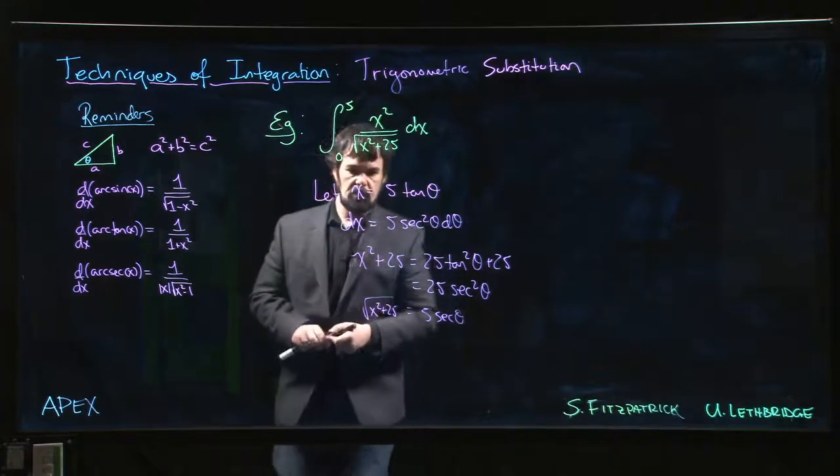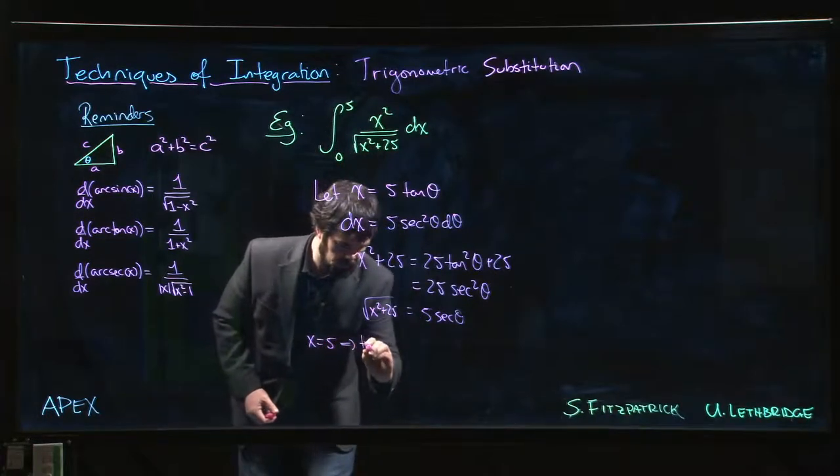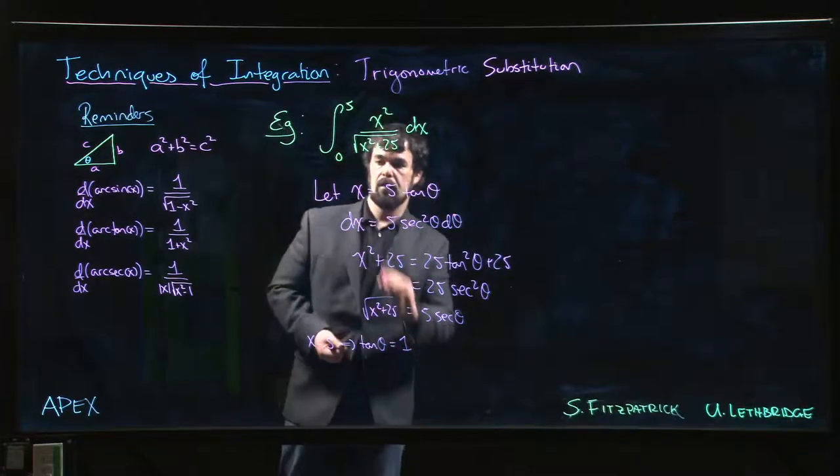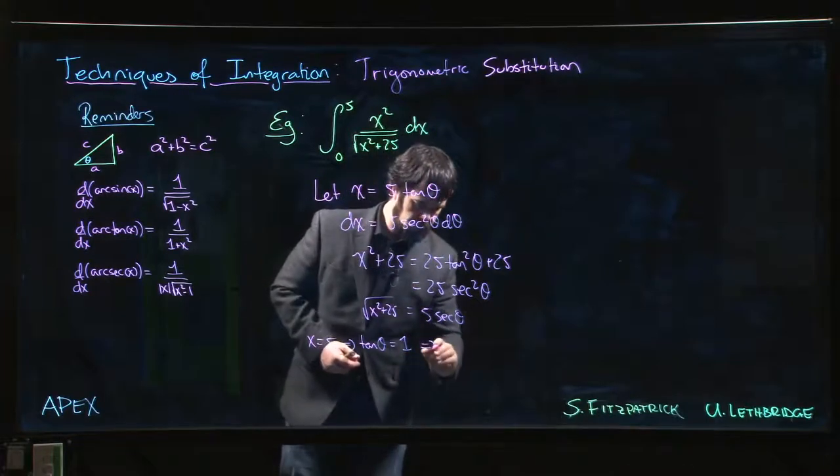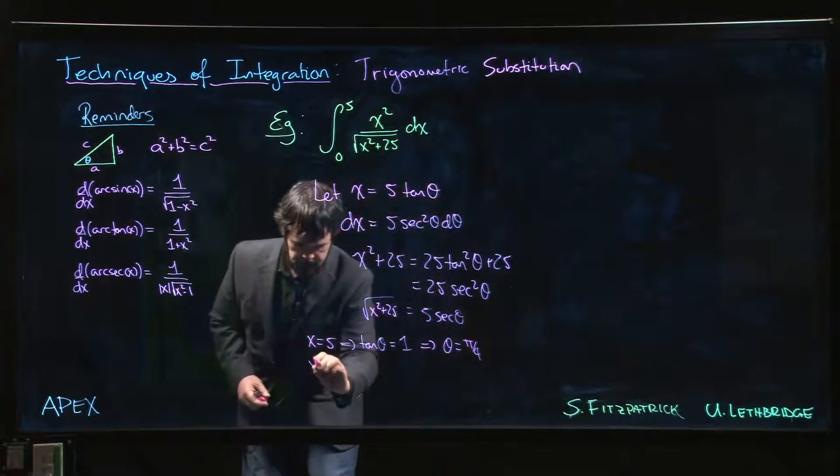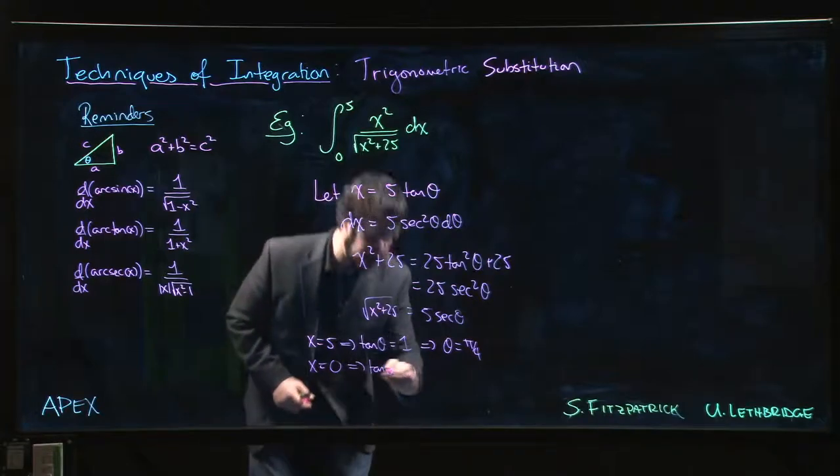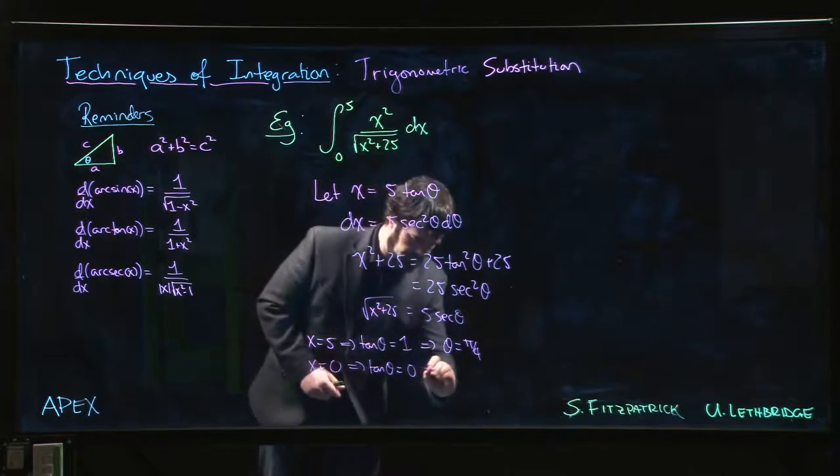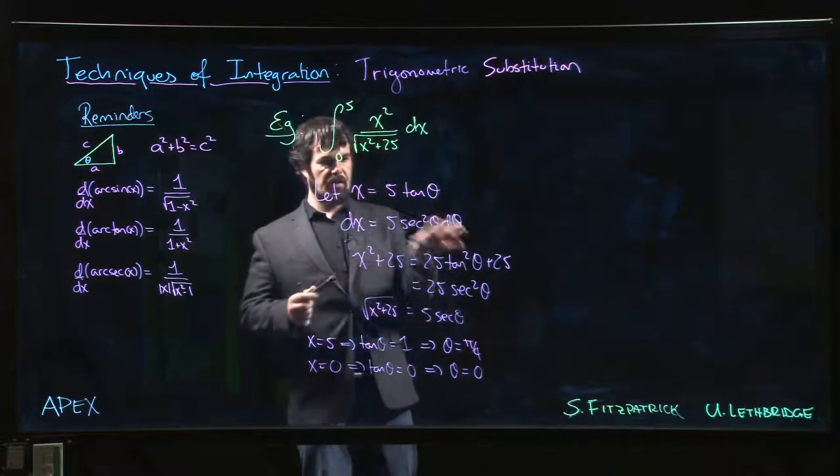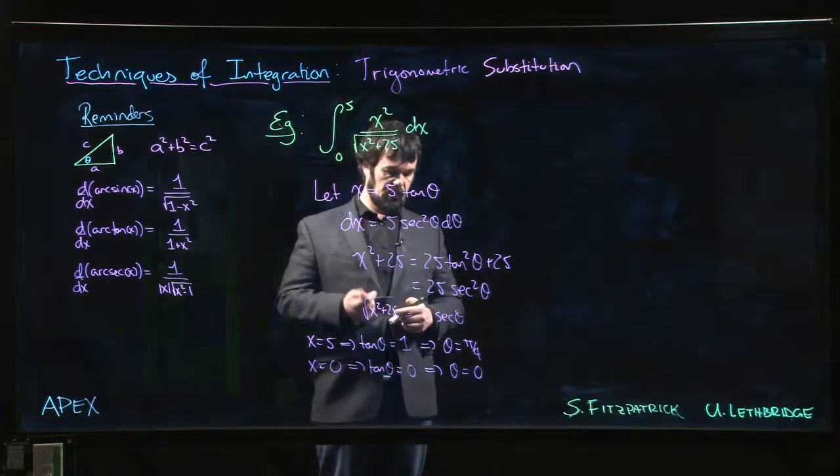So if x is equal to 5, that means that tan theta is 1, which means that theta has to be pi over 4. If x is equal to 0, that means that tan theta is 0, and that means that theta is 0. Remember, theta is really arc tan of x over 5, so we have to take the angles that the arc tan function gives us.